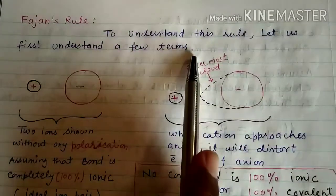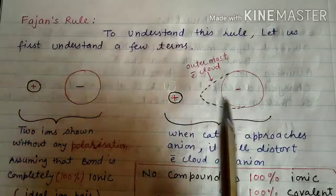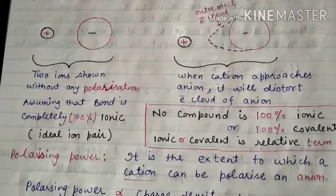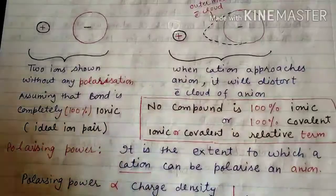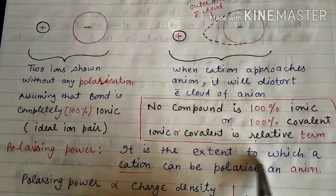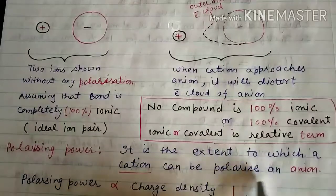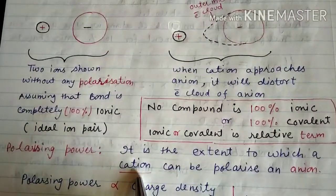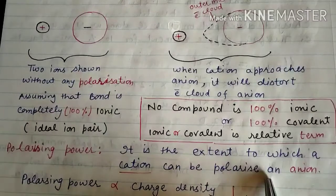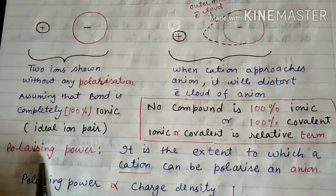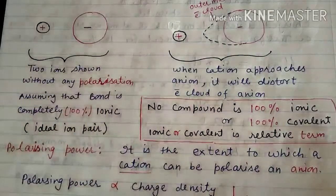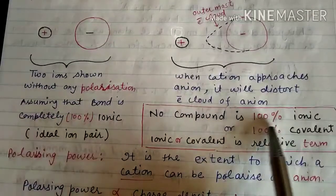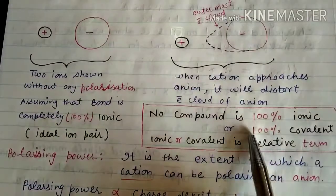To understand Fajan's Rule, let us first understand a few terms. The first term is polarizing power. Polarizing power is the extent to which a cation can polarize an anion. Polarizing power is for cations. First, we must understand that no compound is 100% ionic or 100% covalent — ionic or covalent is a relative term.